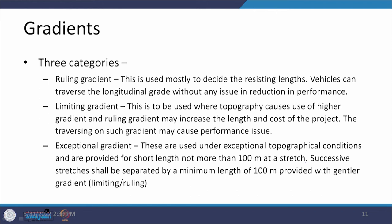There are three categories of gradients used when connecting one location to another: rolling gradient, limiting gradient, and exceptional gradient. Depending on the road type — local roads, rural highways, multilane highways, or expressways — there may or may not be defined values for all three categories.